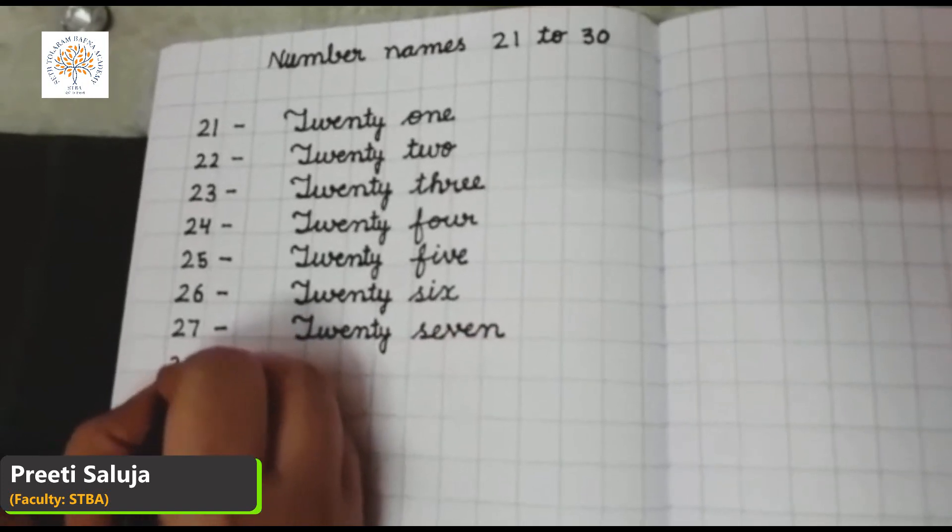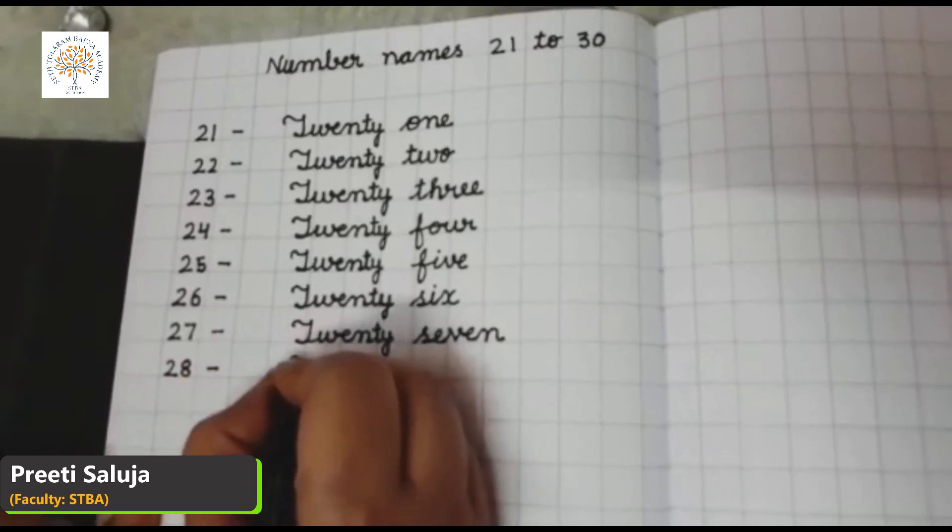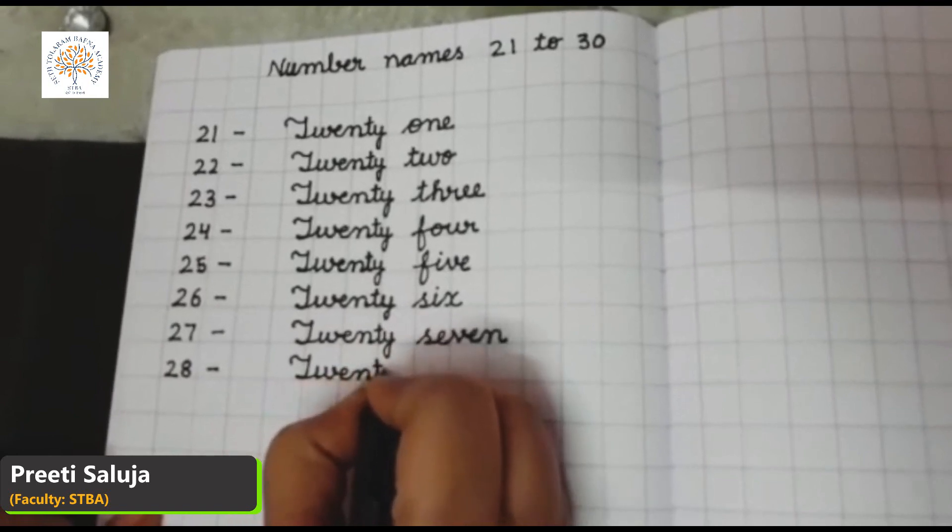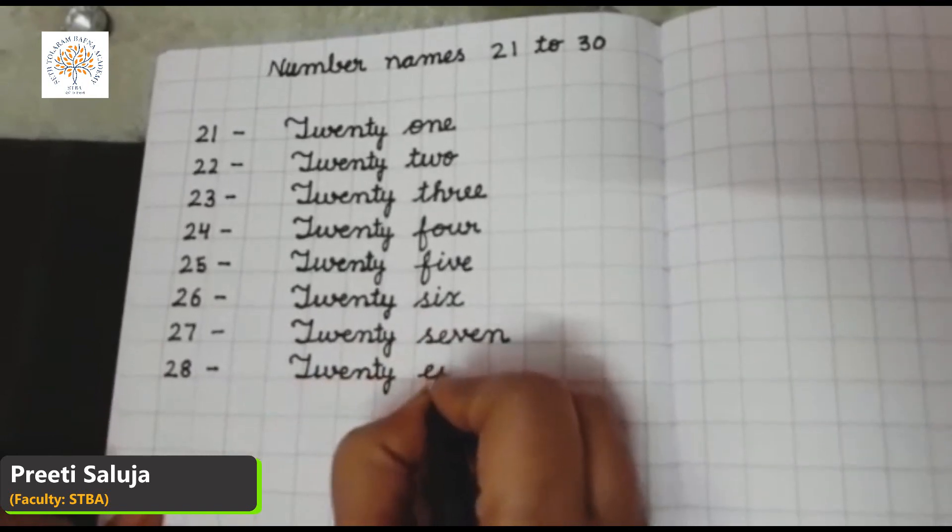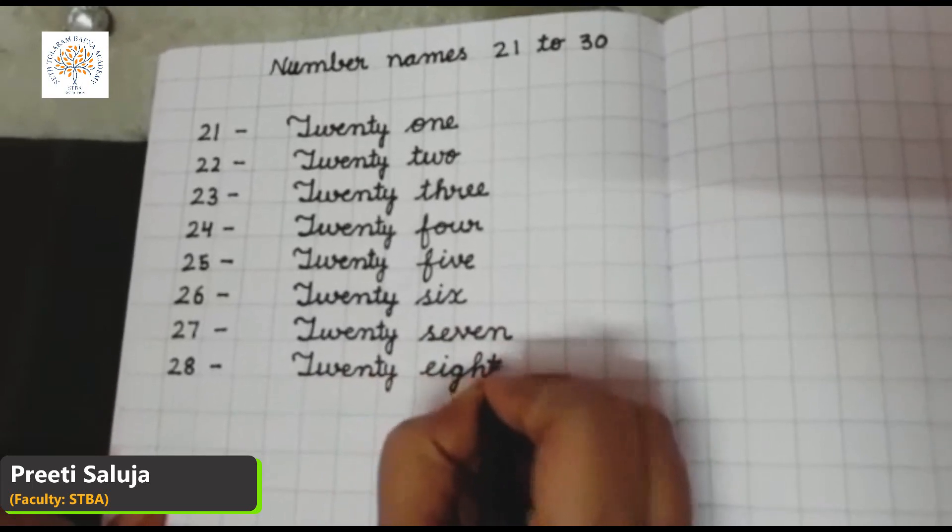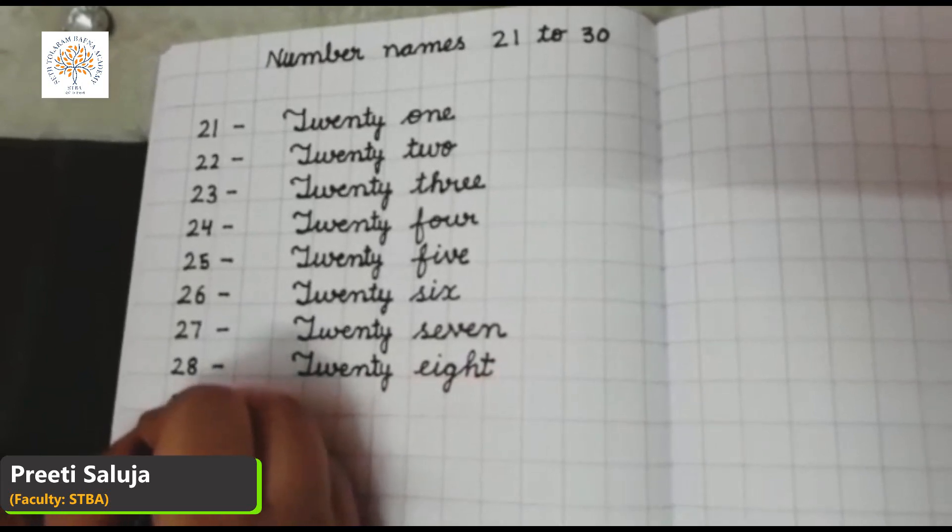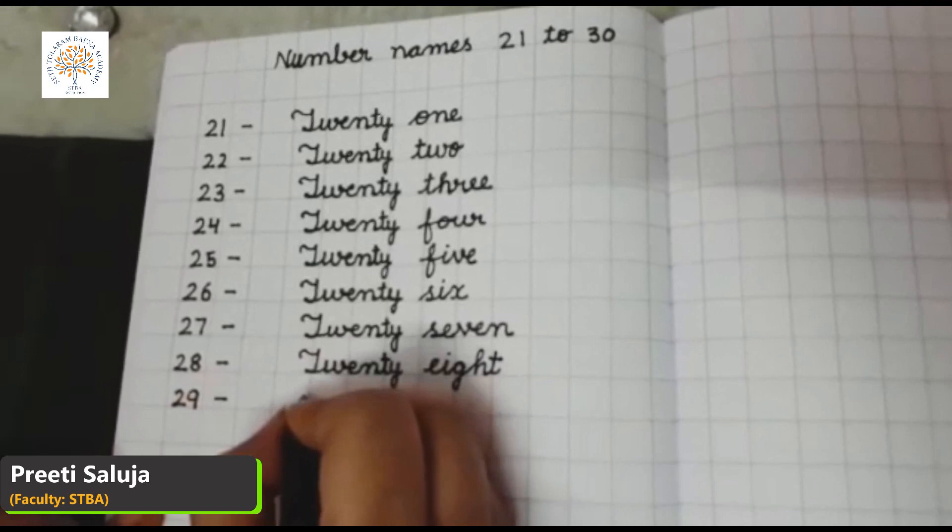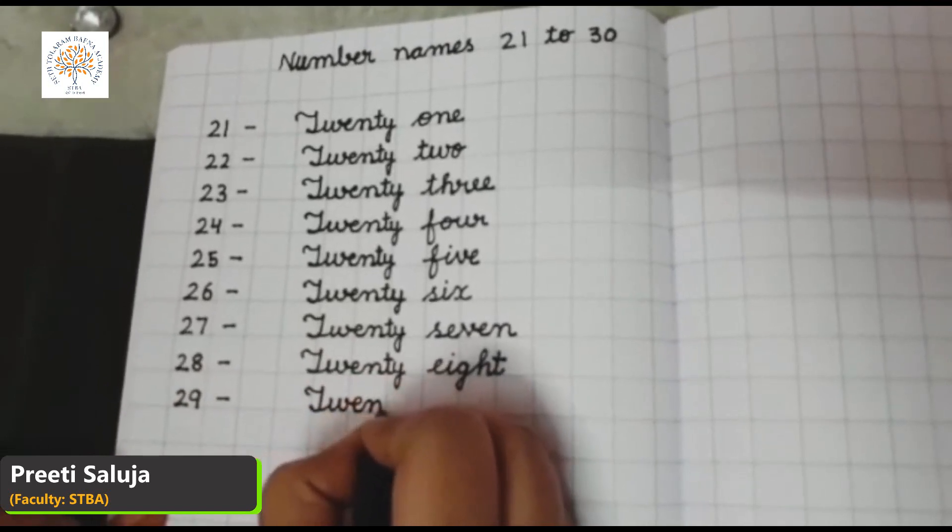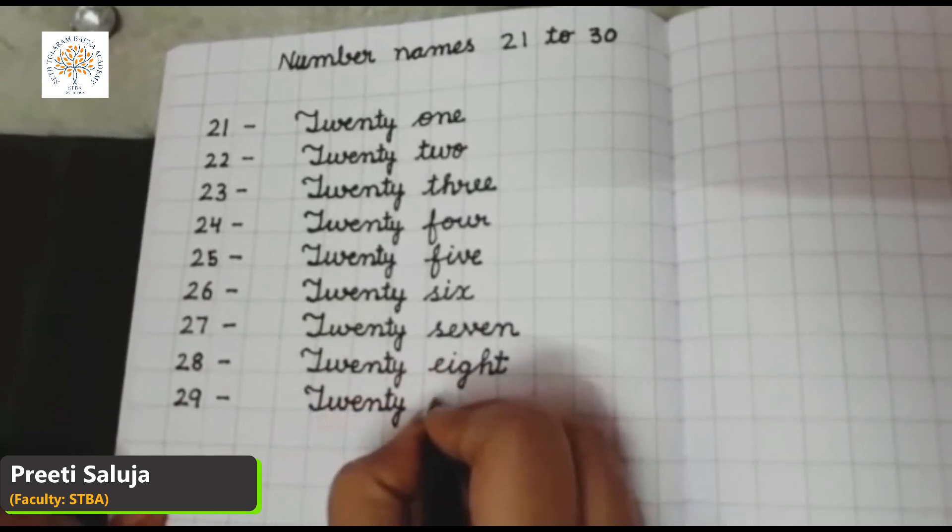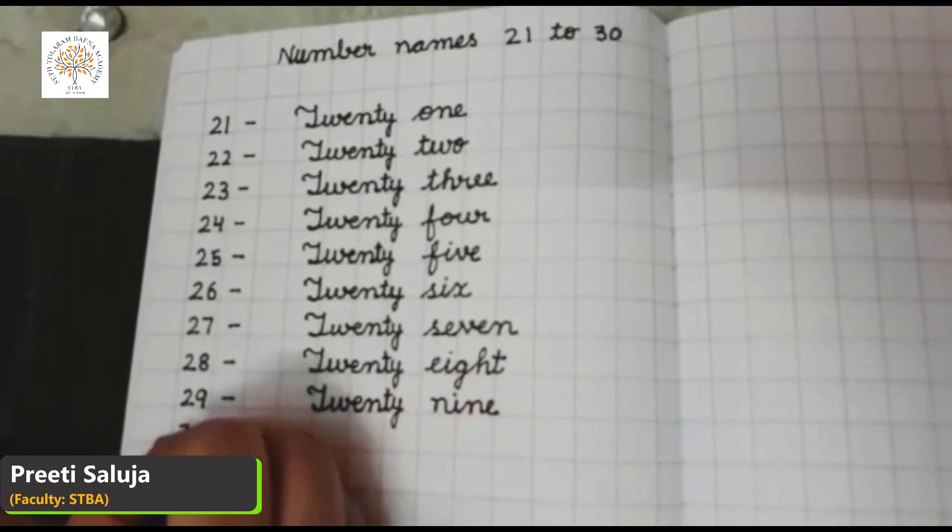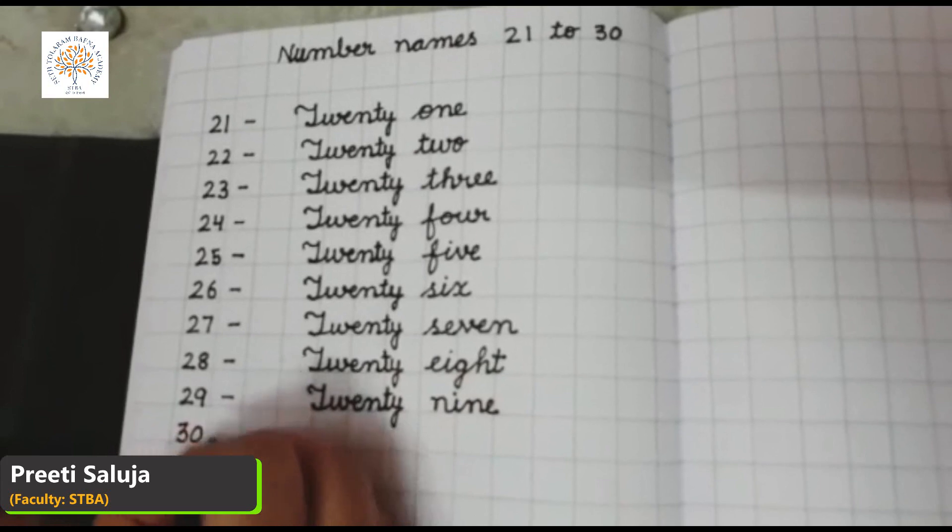28, T-W-E-N-T-Y, 20, E-I-G-H-T, 8, 28. 29, T-W-E-N-T-Y, 20, N-I-N-E, 29. 30.